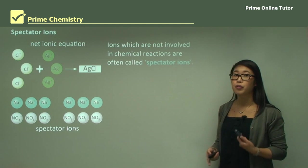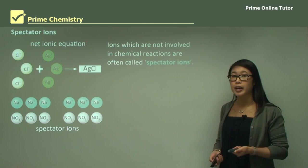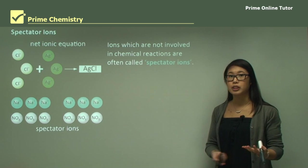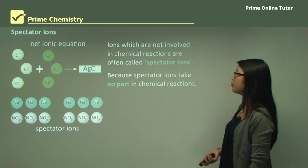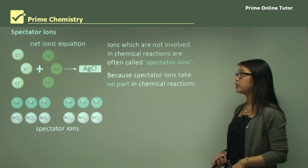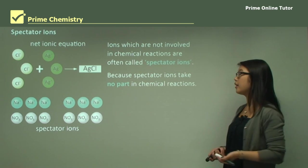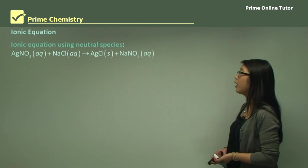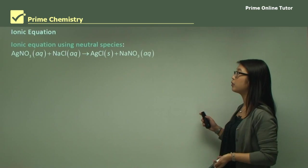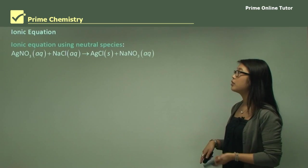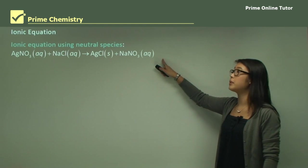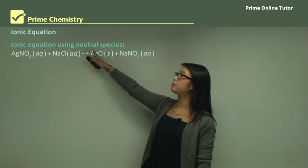Spectator ions are not involved in the chemical reaction — they just sit around maintaining the electrical charge balance. They don't take any part in chemical reactions, which is why we call them spectator ions. We can write ionic equations in different ways: they can include all species, using neutral species as well.